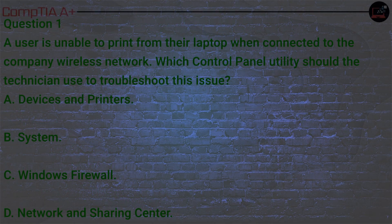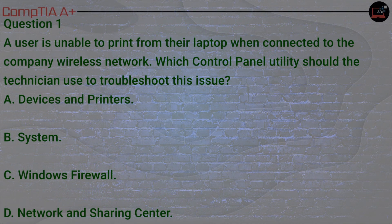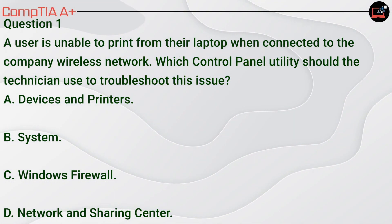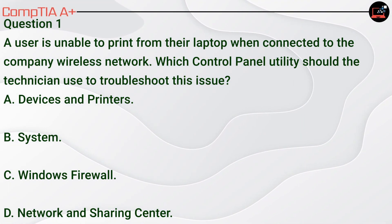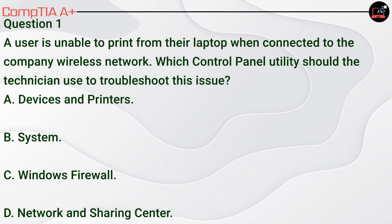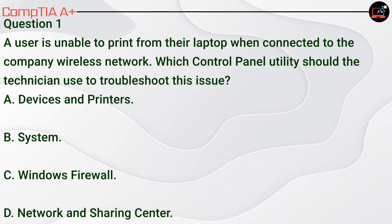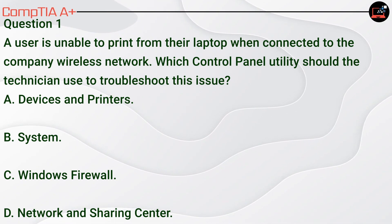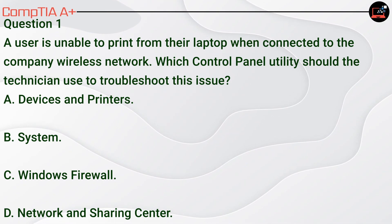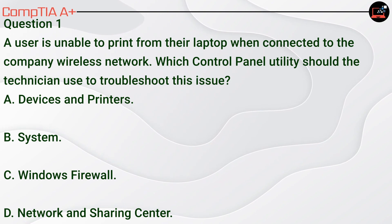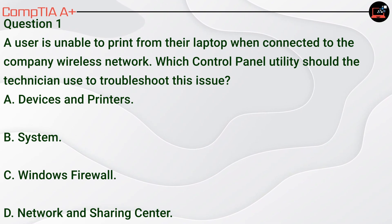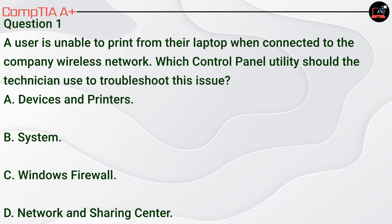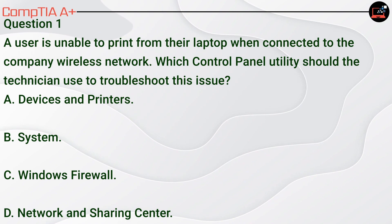The first question is about a user who is unable to print from their laptop when connected to the company's wireless network. Which control panel utility should the technician use to troubleshoot this issue? A, Devices and Printers. B, System. C, Windows Firewall. D, Network and Sharing Center.